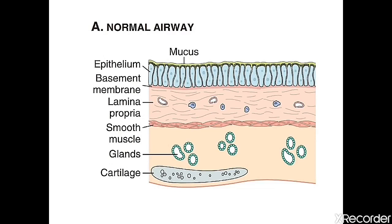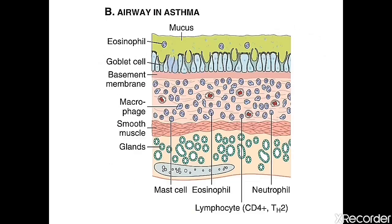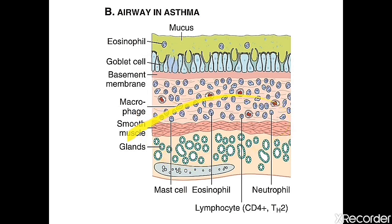The normal airway has respiratory epithelium covered by a very thin mucous layer for lubrication and moistening, beneath which are the basement membrane, lamina propria with glands, smooth muscle, and cartilage. In asthmatic airway, there is a thick mucous plaque, increased goblet cells — metaplasia — thickened basement membrane, macrophages in the lamina propria, and smooth muscle hypertrophy and hyperplasia. Mast cells, neutrophils, and chronic inflammatory cells are also found in the lamina propria.